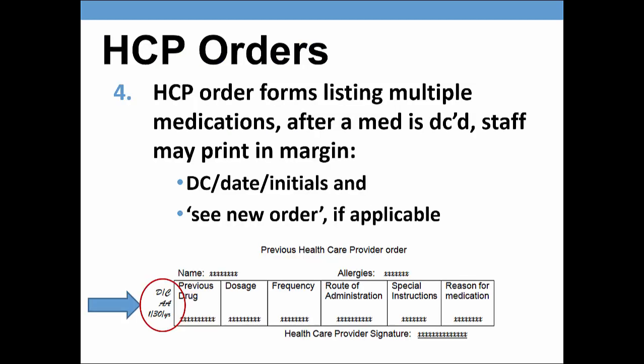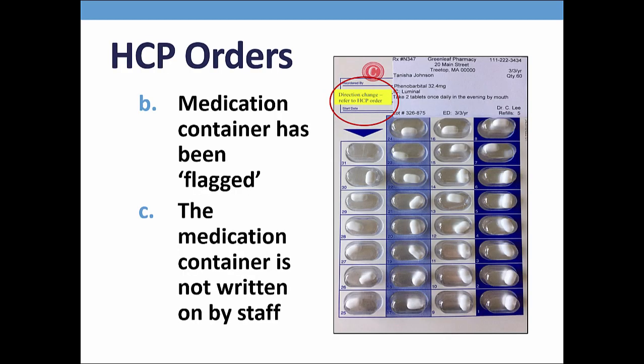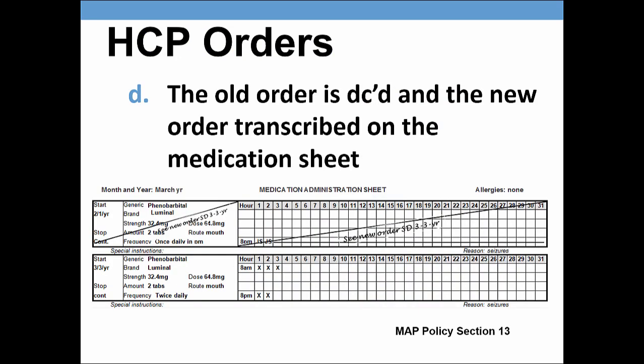If an HCP order form contains multiple medication orders and one of the orders is DC'd or superseded by a new order, staff should indicate the change by marking in the margin of the HCP order near the specific medication: DC, the date, and their initials. If the HCP makes a change to an existing medication order, the current supply of medication on hand may be used as long as the new HCP order reflects the change, the medication strength on hand allows for easy administration, the container is flagged using a sticker that does not cover any of the label directions, and the old order must be DC'd on the medsheet and the new order transcribed. Changes cannot be made to an existing transcription to reflect the new order.